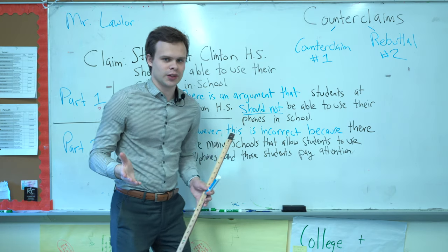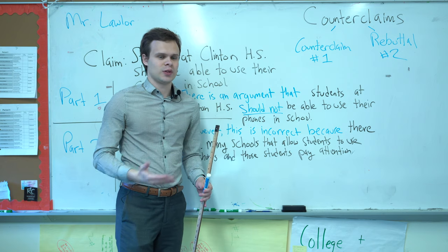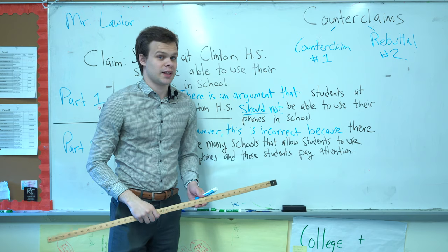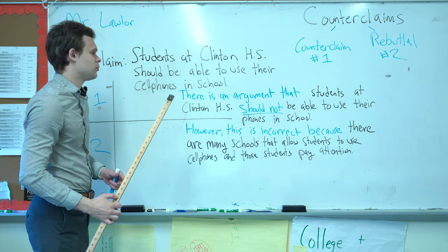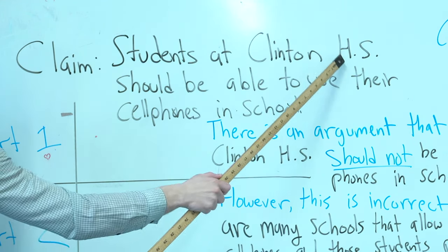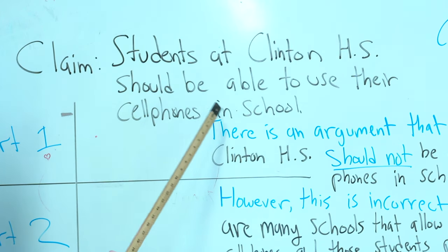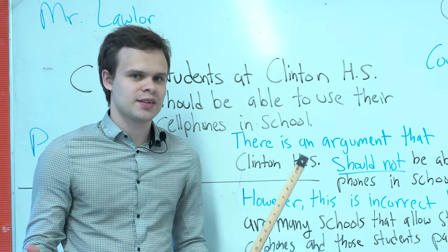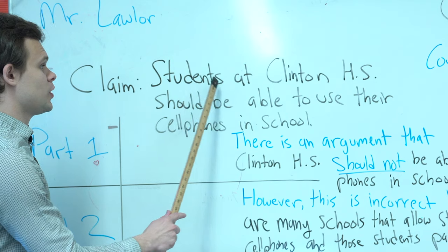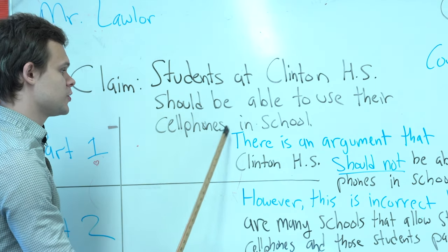How do you create a counterclaim in an essay with these two parts? Let's take a look at an example. The example claim we're going to use today is: students at Clinton High School should be able to use their cell phones in school. Pretend that you are making this argument on part two of the English Regents.